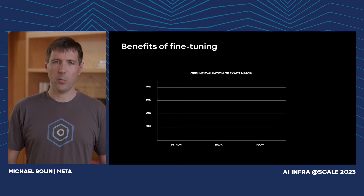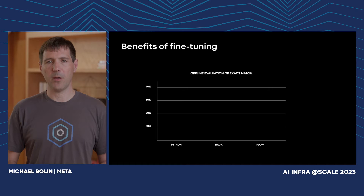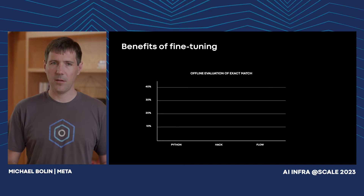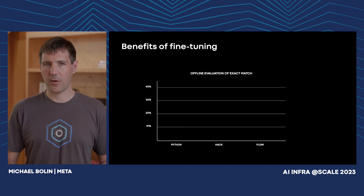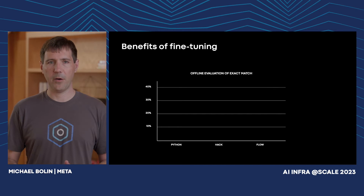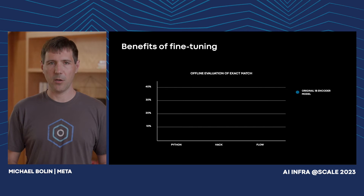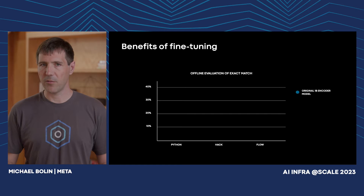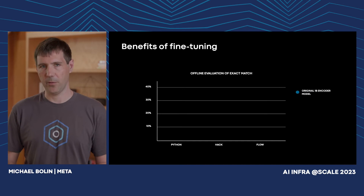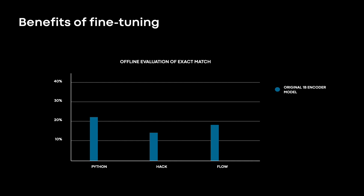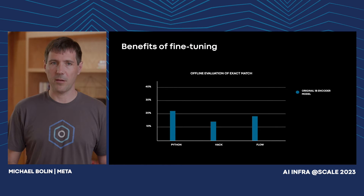To assess the impact of fine-tuning, we ran an offline evaluation of different versions of the model to measure its ability to infill an exact match on first-party code across various languages. We prepared three versions of the model. As a baseline, we took the original 1.3 billion encoder model and used it to infill a random sampling of snippets of first-party Python, Hack, and Flow code. As expected, the model performed best on Python, reproducing the original code over 20% of the time. Surprisingly, the model was also able to yield an exact match over 10% of the time for Hack and Flow, despite those languages not being well represented in the original training data.